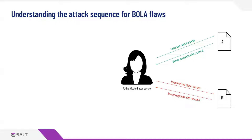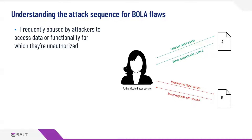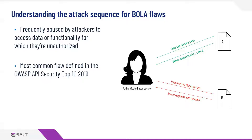Not terribly complicated. When you see a request, it will make a little bit more sense. This is frequently used by attackers to access data or functionality for which they're not authorized. They'll reverse engineer applications and API traffic flows to understand what is the normal API call sequence and then start to manipulate requests to access things they're not authorized for. This is the most common flaw, and it ranks number one for a reason. We see this very frequently in many API incidents.